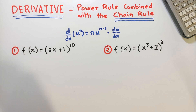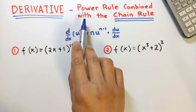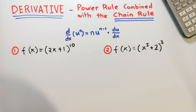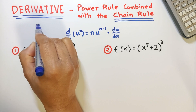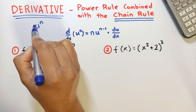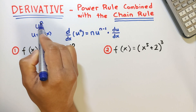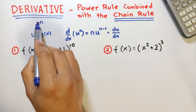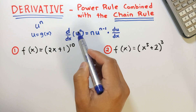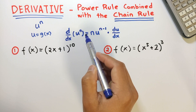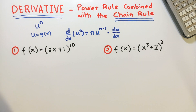Hello guys. In this video I will show how to find the derivative of a function using the power rule combined with the chain rule. Our objective here is to find the derivative of a function of the form u raised to n, where u is another function g of x raised to a power n, and n here is any real number. The derivative of u raised to n is equal to n times u raised to n minus 1, times the derivative of u with respect to x.